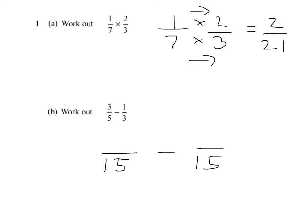So if I've multiplied the five by three, I must do the same to the top, so three-fifths is nine-fifteenths.